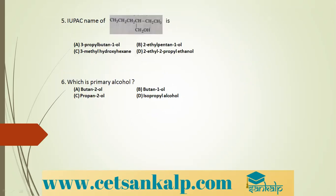For IUPAC nomenclature of the given compound: numbering the carbon chain gives positions 1 through 5, making it a pentane backbone. There is an ethyl group on carbon 2, and an OH group on carbon 1. So the correct IUPAC name is 2-ethylpentan-1-ol.